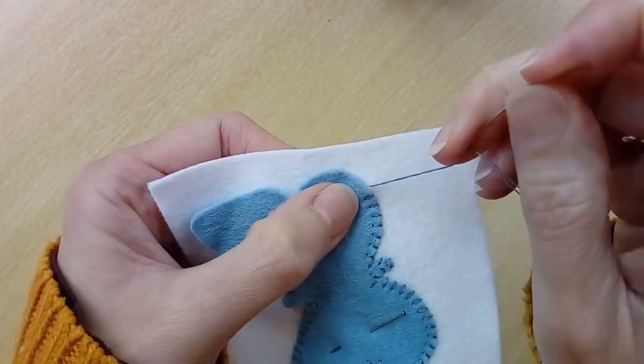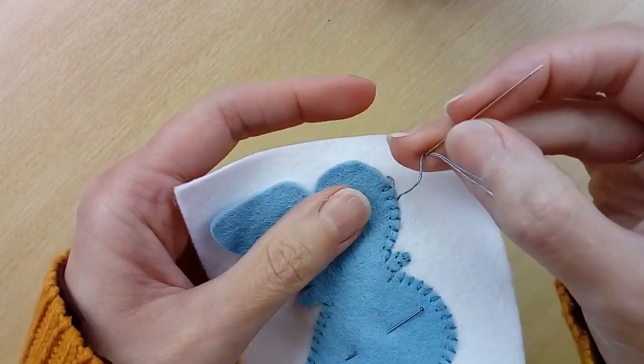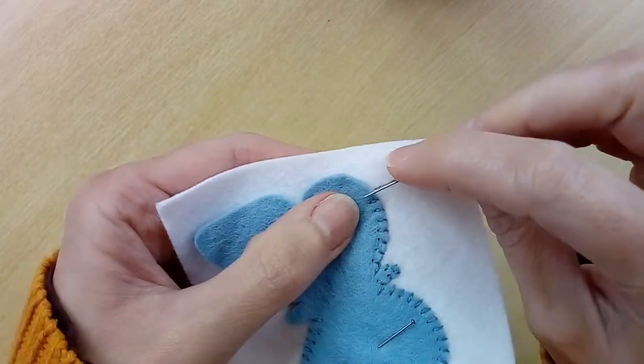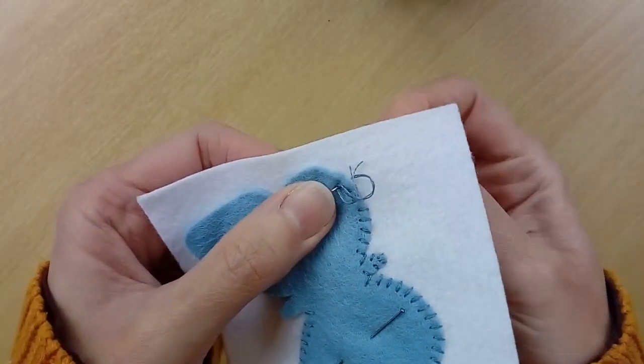So now we're coming up to the end of our thread. We're not going to get much more out of that, so what we'll do is do our last stitch with that piece of thread and I'll show you how to fasten it off.